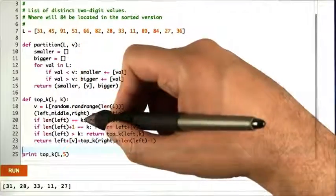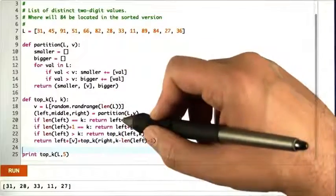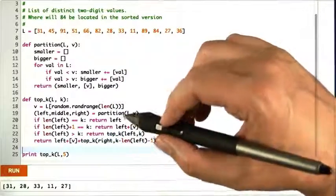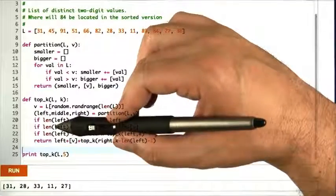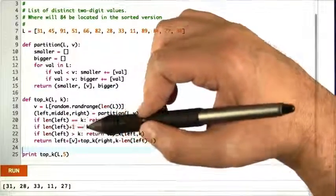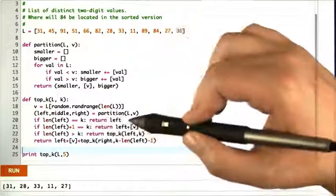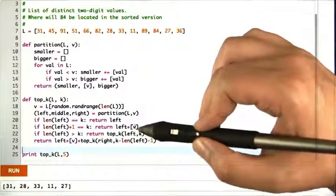If the size of the left is exactly k, we're done - the left is what we want. Actually, I didn't talk about this before, but if the length of the left plus 1 equals k, then we still know the answer because it's the stuff on the left including v.